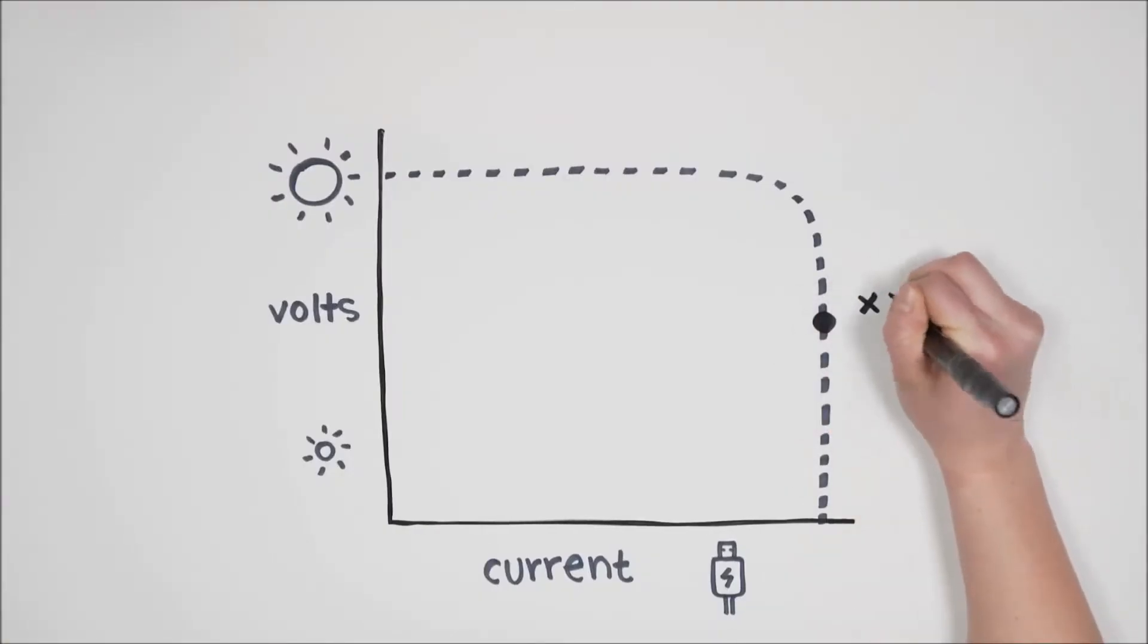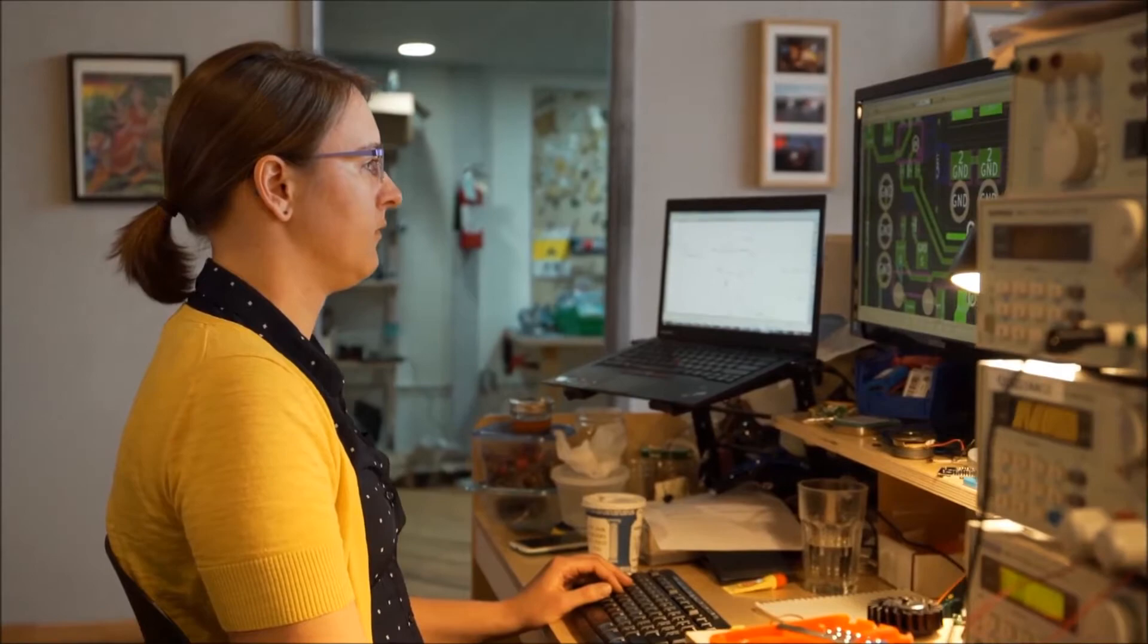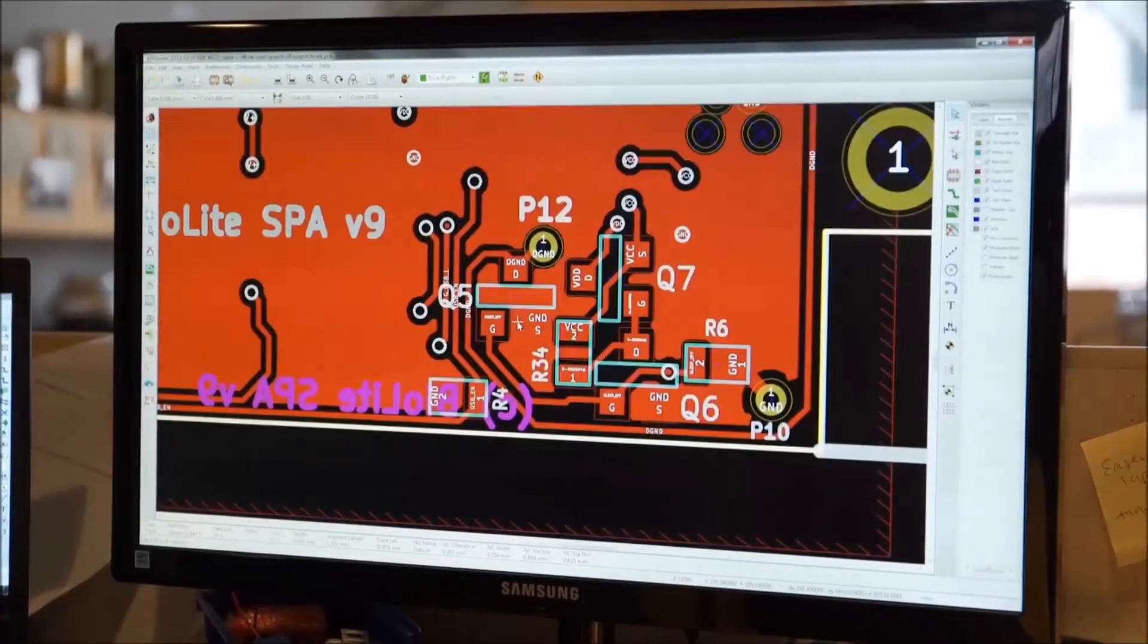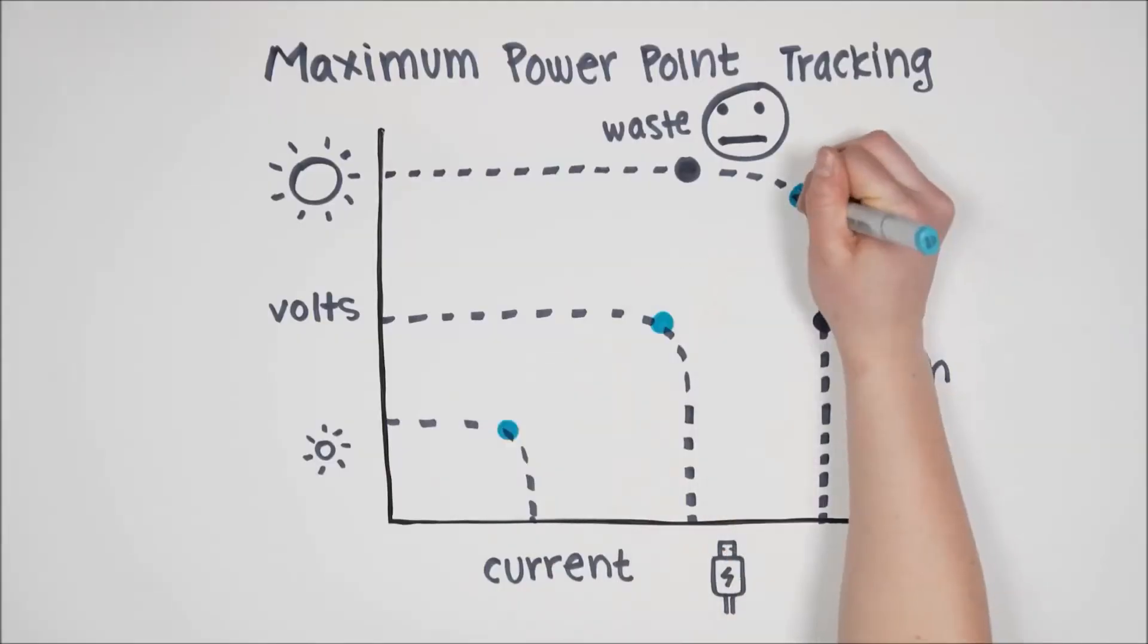When it comes to charging, some panels will either pull too much current and crash the system, or pull too little and waste valuable energy. With BioLite's maximum power point tracking, our onboard microprocessor is constantly monitoring the level of sun and dynamically adjusting our converters, so you're always getting the most power possible.